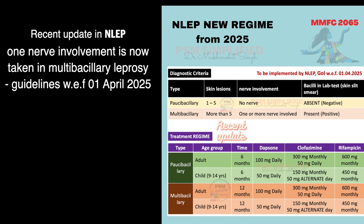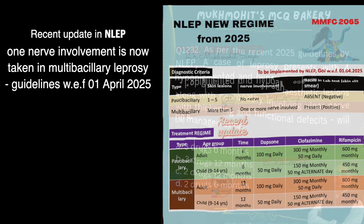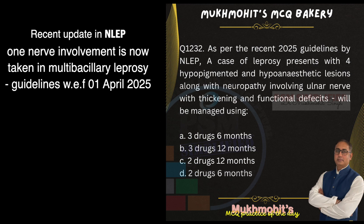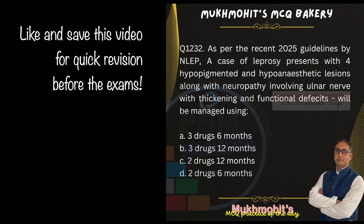Coming back to the MCQ: four lesions were present with nerve involvement. As per the new guidelines, this is a case of multibacillary. So we have to go with three drugs to be given for 12 months. Option B is the correct answer. Take care, all the very best, and keep on revising.